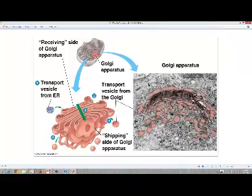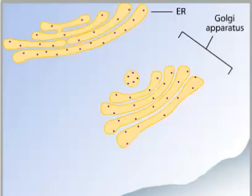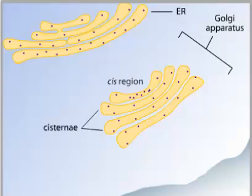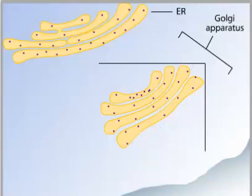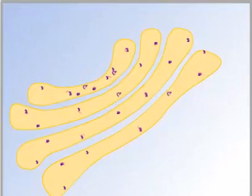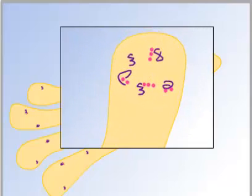The sacs of the Golgi apparatus are called cisternae. The part of the Golgi nearest to the ER is the cis region, or the receiving side, and the part nearest the plasma membrane is the trans region, or the shipping side. The middle cisternae are called the medial region. Proteins are delivered in vesicles from one cisternae to the next, and each compartment contains enzymes that will modify the proteins. For example, in one particular sac, a sugar residue is cleaved from a protein.